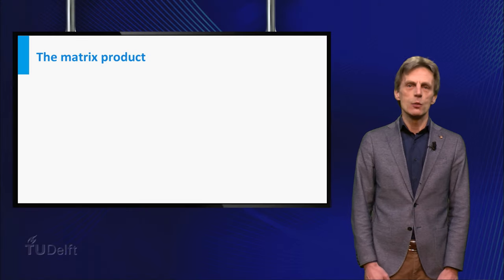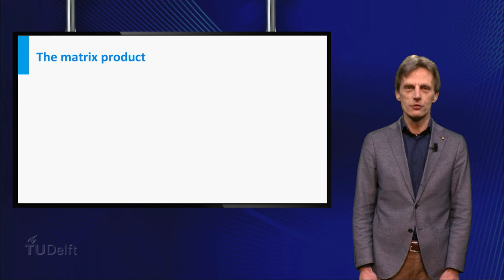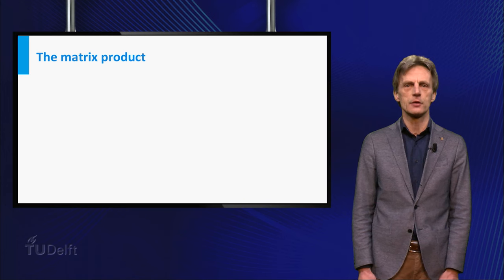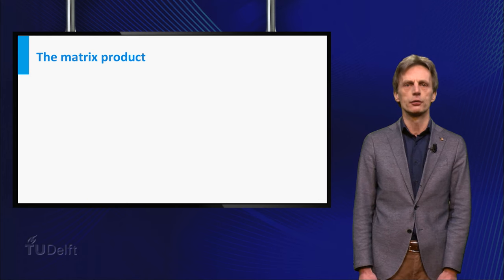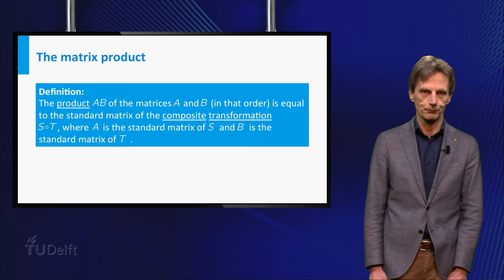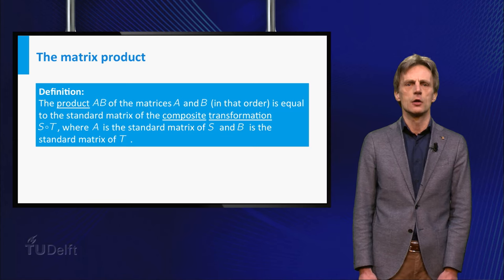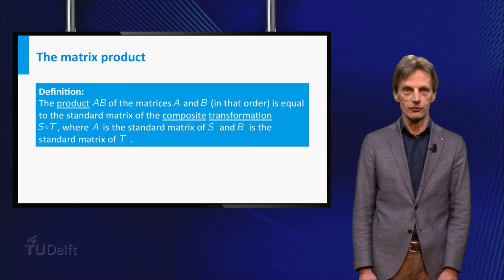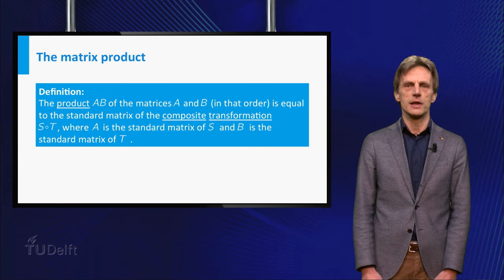This matrix C is by definition equal to the product AB of the matrices A and B. In other words, the product AB of the matrices A and B is the standard matrix of the composite transformation S after T, where A is the standard matrix of S and B is the standard matrix of T.